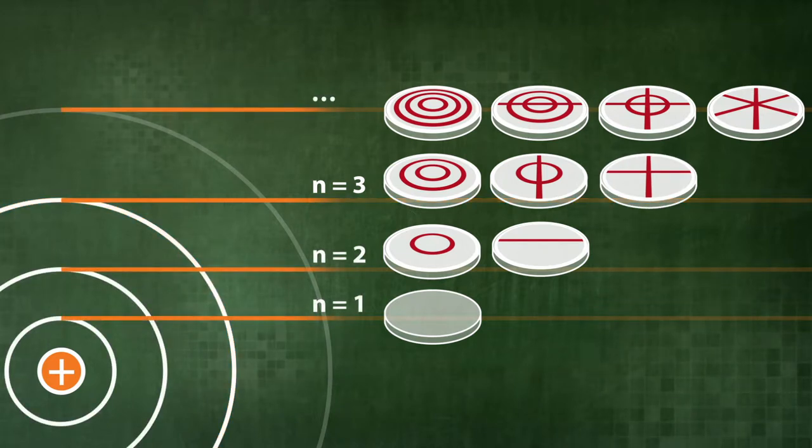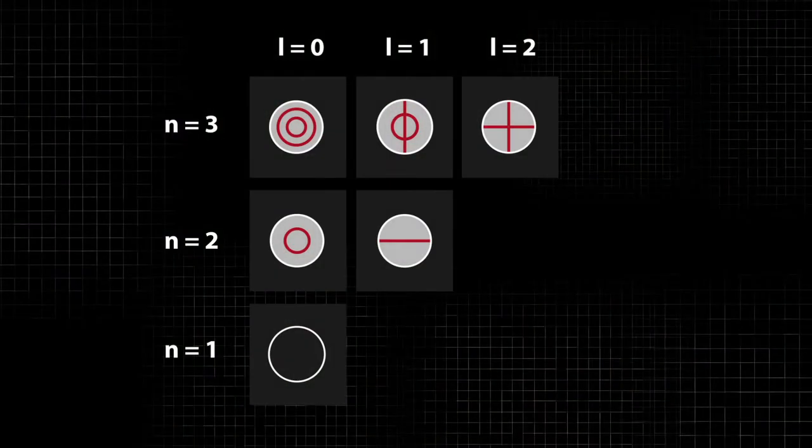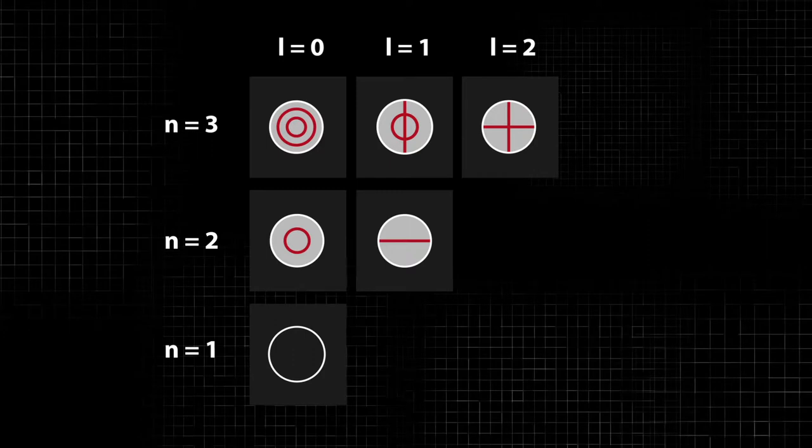Thus, l equals 0, 1, 2. If the electron were a two-dimensional object, this is how its spectrum would look like in the quantum dimension.